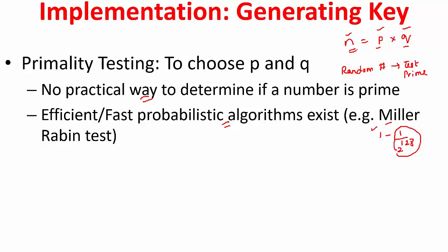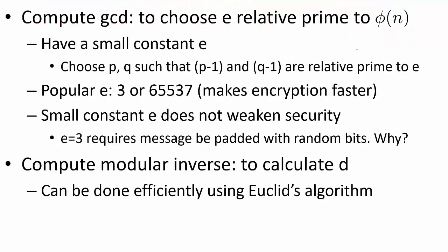So that is how to choose prime numbers. But you require a few other things also. You also need to ensure that e is relative prime to this totient function, which is nothing but the product of these two. Now how do you ensure this? Now e, it is useful if e were a small number, because if you see we do this operation m raised to power of e, and if e were small, your encryption will be very fast.